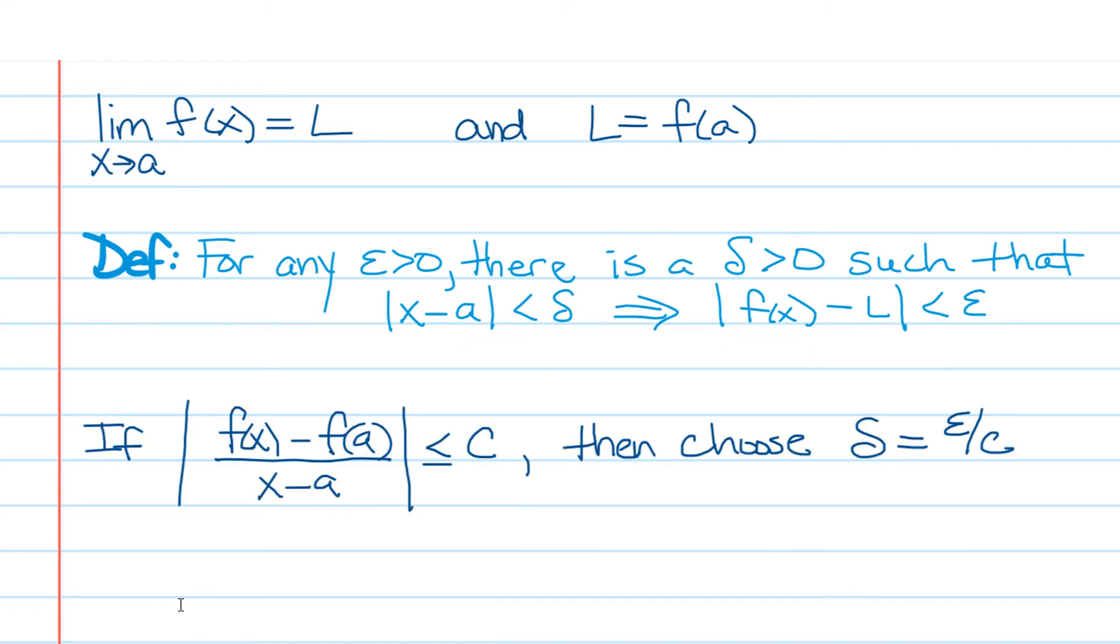Now the technique that Dr. Johnson mentions in his tips sheet is, if you can get f of X minus f of a over X minus a, the absolute value of that, to be less than or equal to some particular constant C, if you can find that number C so that that expression is bounded by C, then it's safe to choose delta to be epsilon divided by C. So let's talk about why.